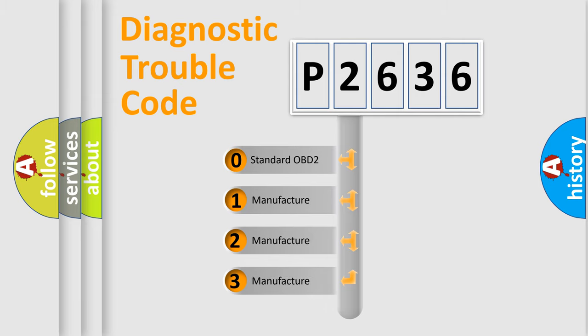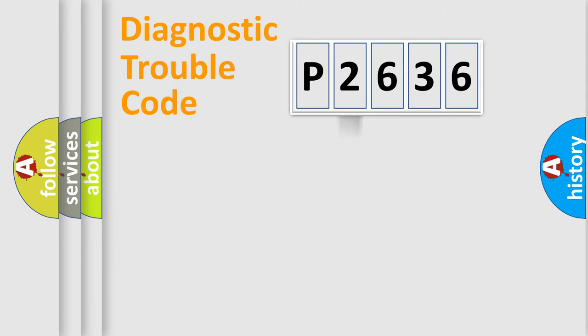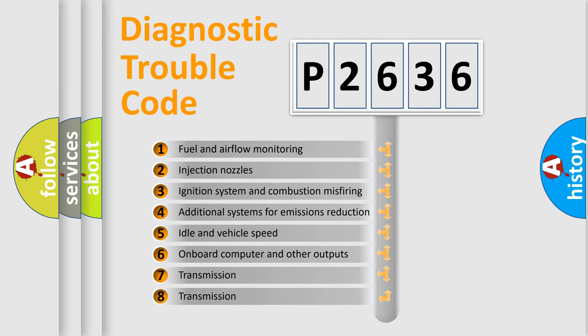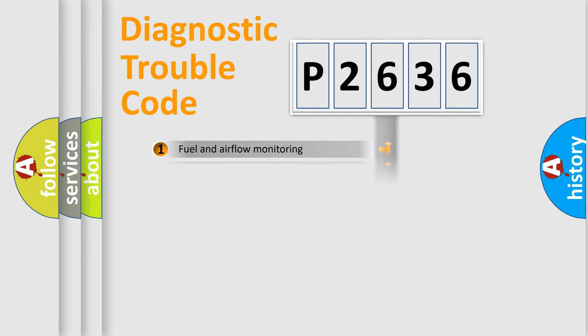If the second character is expressed as zero, it is a standardized error. In the case of numbers 1, 2, 3, it is a more prestigious expression of the car-specific error. The third character specifies a subset of errors.